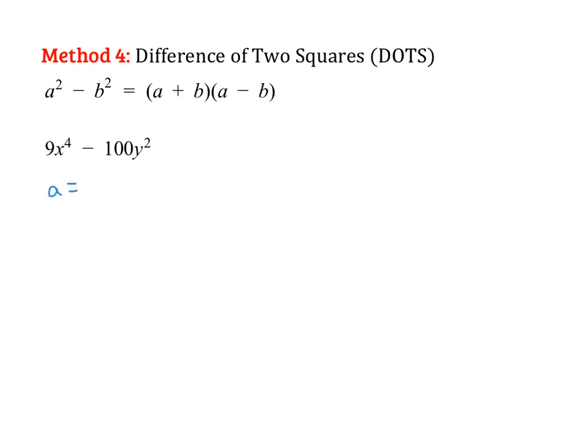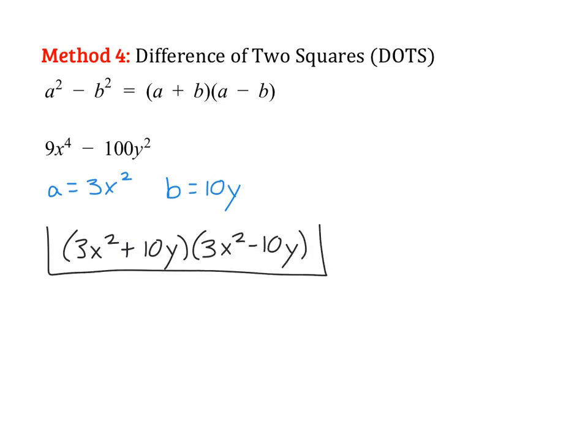So I like to write out my a and b values. So the square root of 9 is 3, square root of x to the fourth is x squared. And my b value, square root of 100 is 10, and the square root of y squared is y. And then you just plug it into your formula. 3x squared plus 10y, 3x squared minus 10y. So just a plus b times a minus b. So again, you can quickly check it by multiplying it out and making sure that it actually results in this binomial.